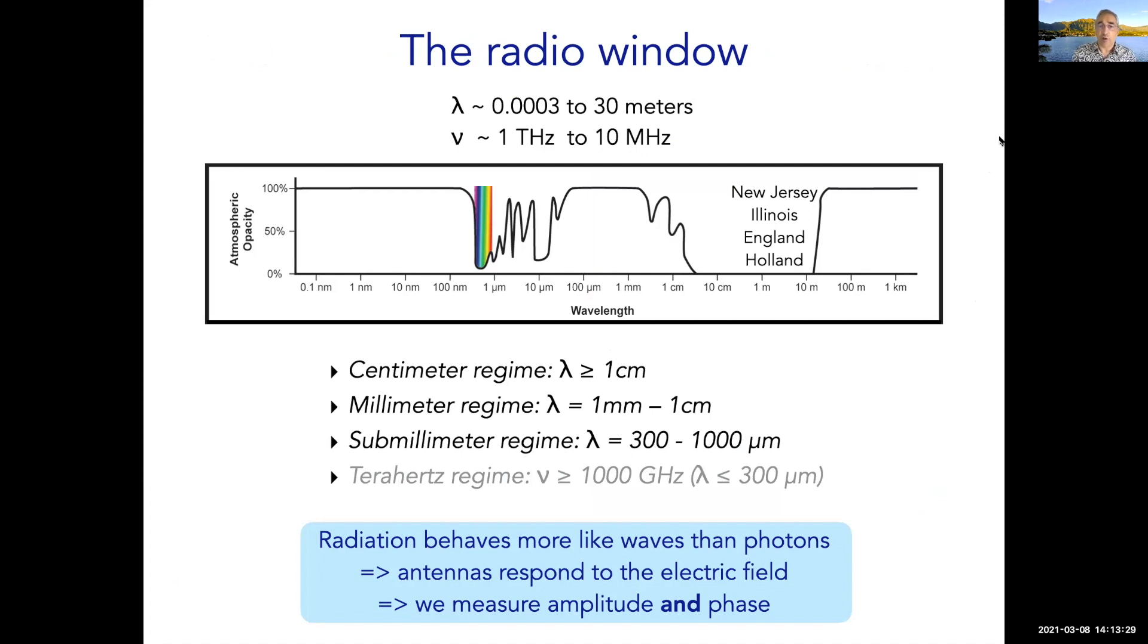The centimeter range is from about a centimeter onwards, the millimeter range from a millimeter to a centimeter, submillimeter below one millimeter, and even into the terahertz regime above one terahertz in frequency. The atmosphere is fairly transparent in this range, especially in centimeter or more. You can observe from very cloudy places. So radio astronomy was actually pioneered in places like New Jersey, Illinois, England, and the Netherlands.